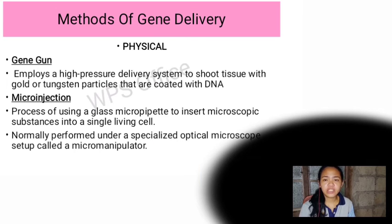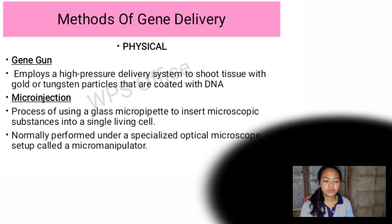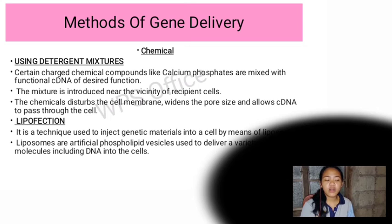Physical methods of gene delivery include, first, the gene gun, which employs a high-pressure delivery system to shoot tissues with gold or tungsten particles coated with DNA. The second physical method is microinjection — the process of using a glass micropipette to insert microscopic substances into a single living cell, normally performed under a specialized optical microscope setup called a micromanipulator.